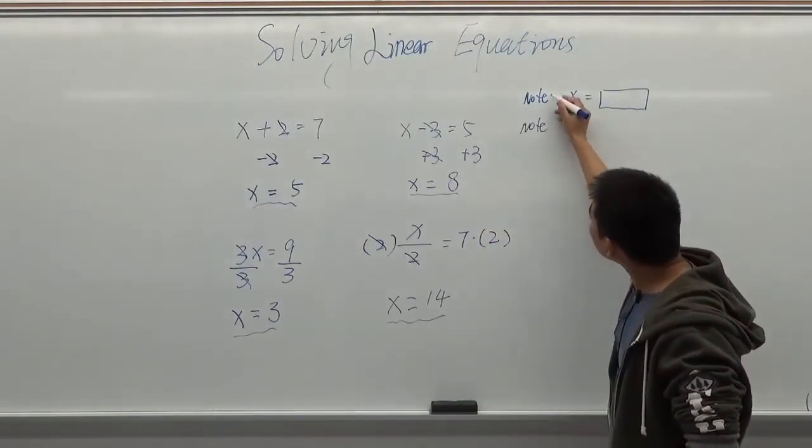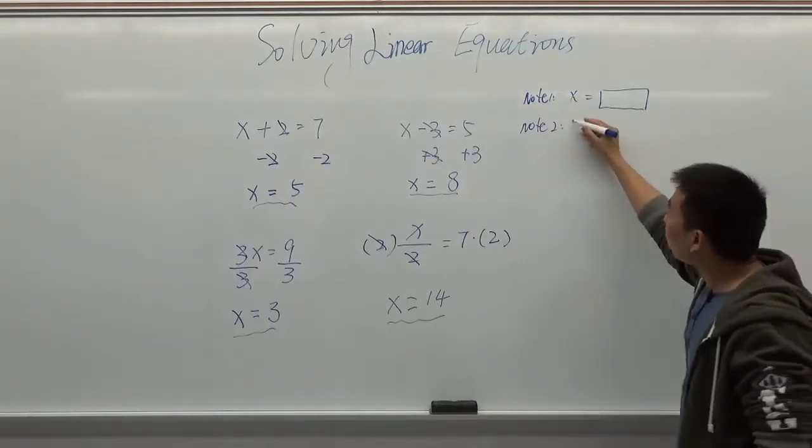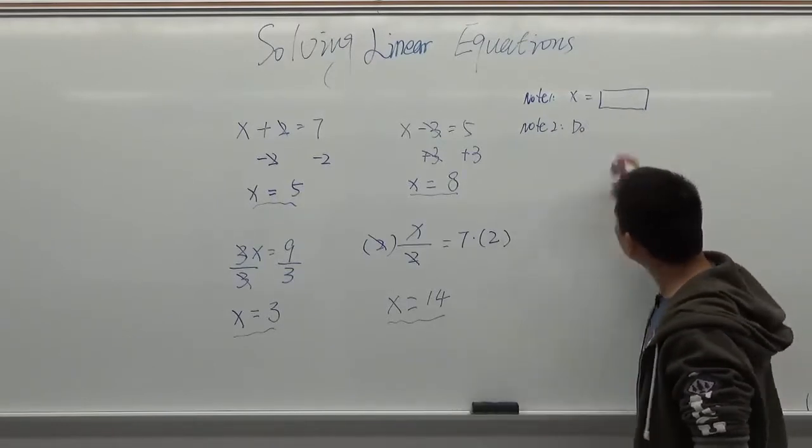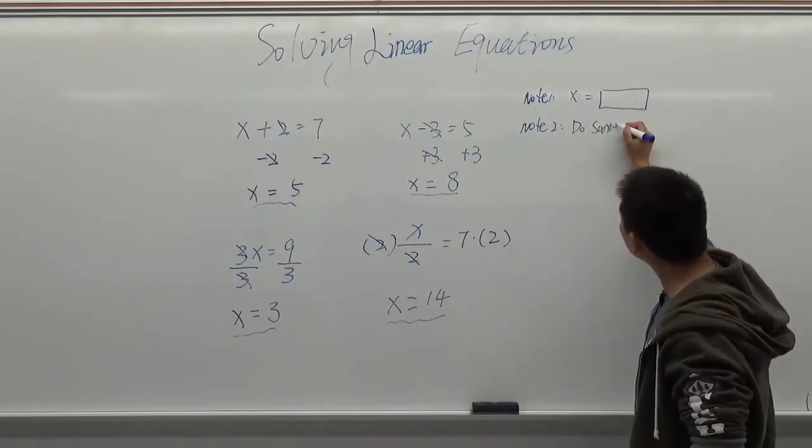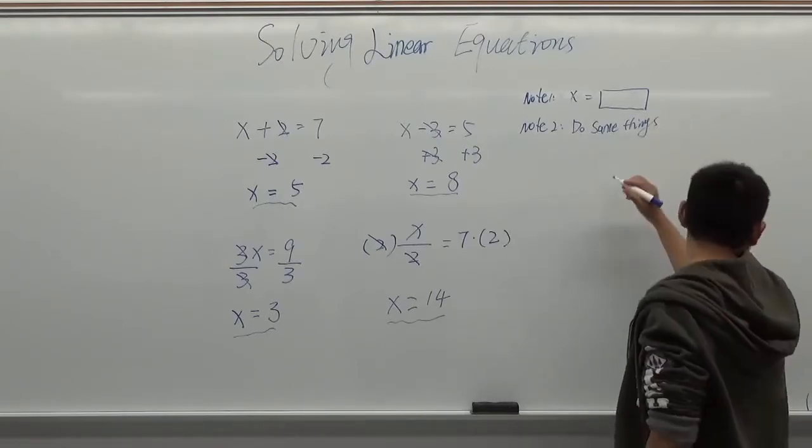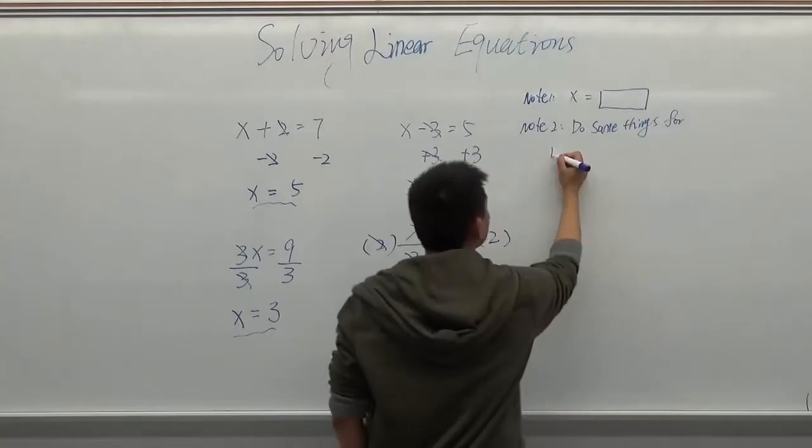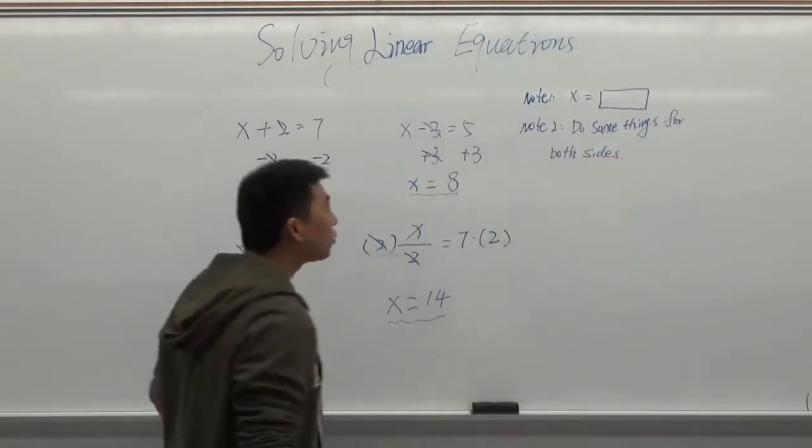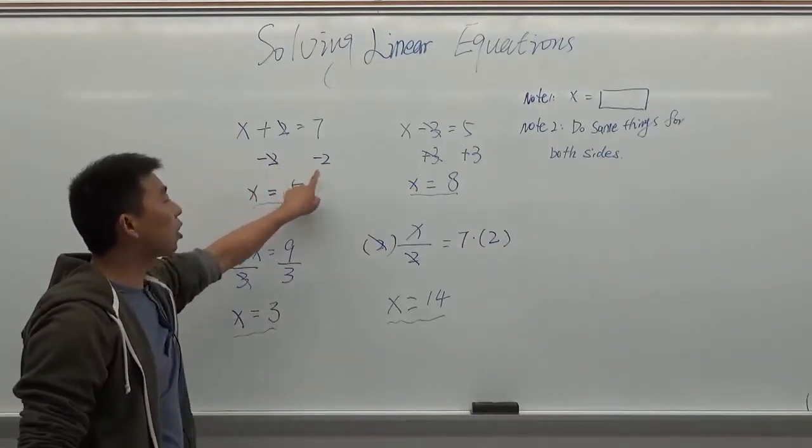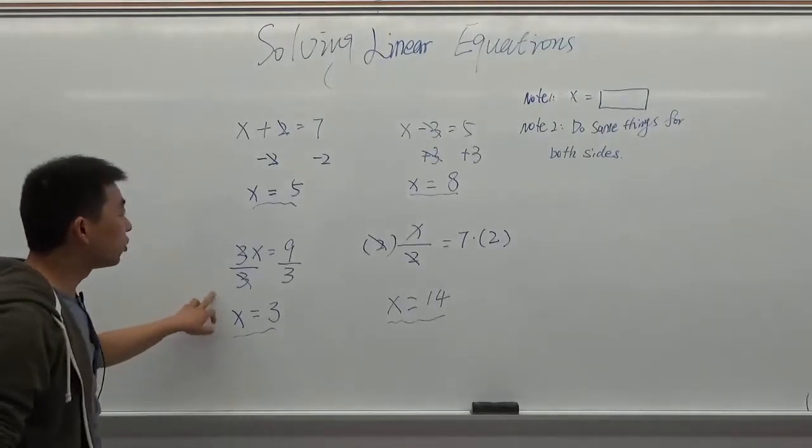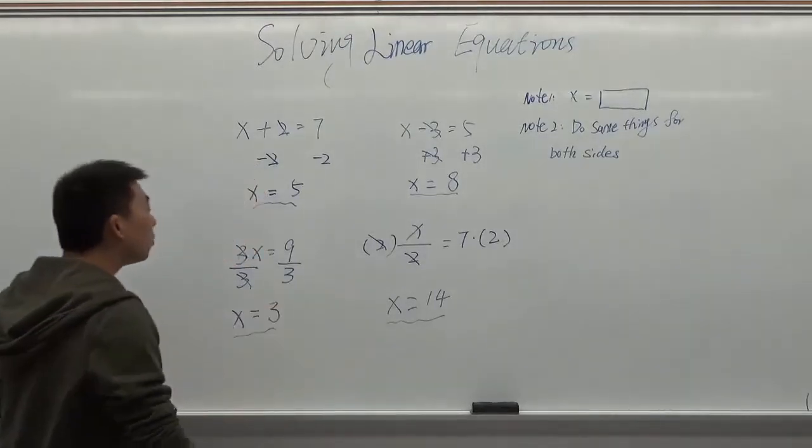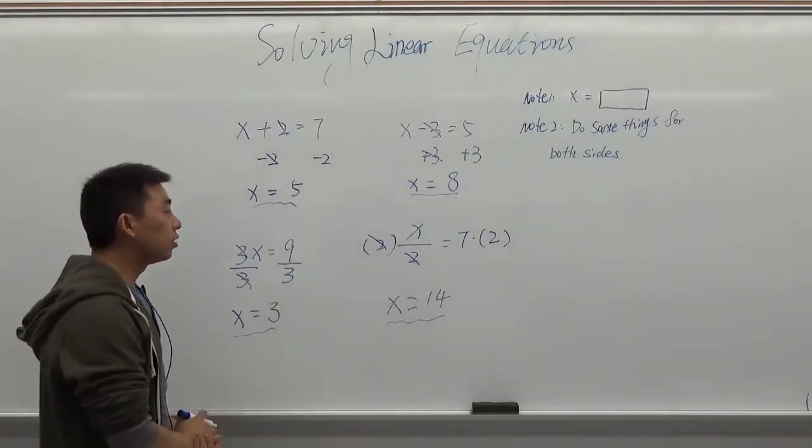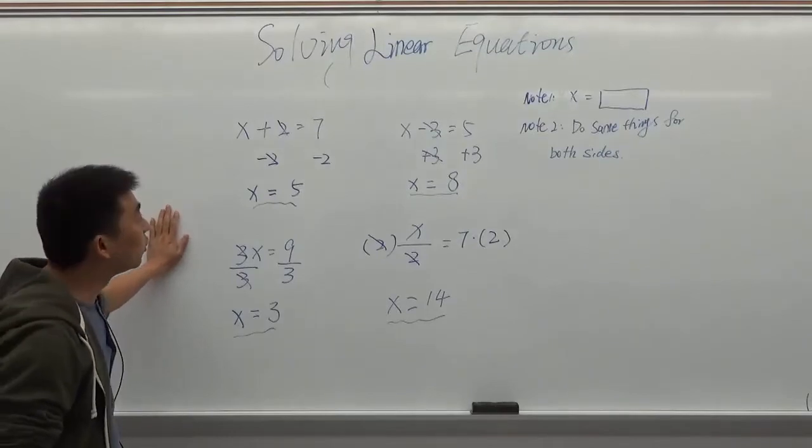You need to do the same thing for both sides. That's really important. Like what we did here, we do subtraction or addition or division or multiplication. Remember when you do one thing, you have to do the same thing to the other side. That's how it keeps the equation on the balance. And that's just a very basic one step linear equation.